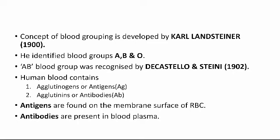Regarding the location of antigens and antibodies: antigens are found on the membrane surface of RBC, while antibodies are present in blood plasma. Plasma is the liquid substance of the blood. These antibodies are part of our body's natural defenses — they recognize foreign substances such as germs and alert your immune system, which destroys them.